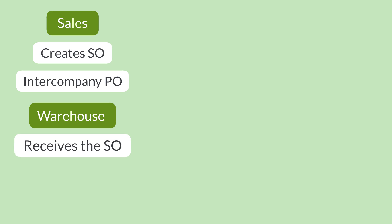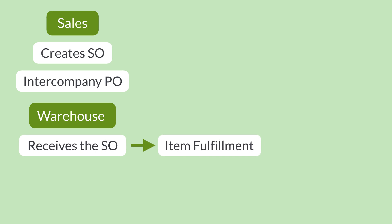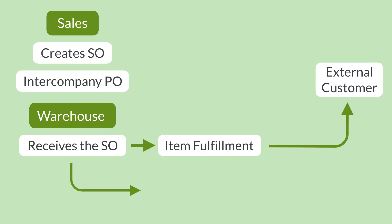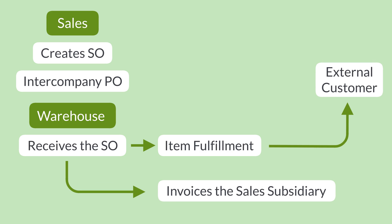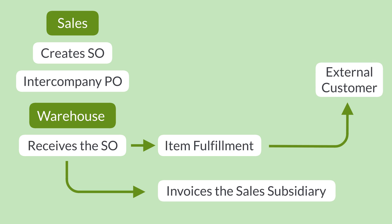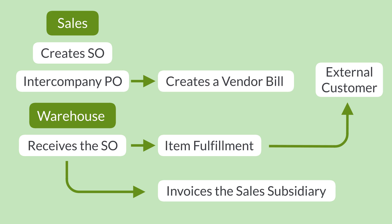The warehouse subsidiary receives the sales order from the external customer and fulfills the item. Then the warehouse subsidiary invoices the sales subsidiary for the item, and the sales subsidiary creates a corresponding vendor bill to pay the warehouse subsidiary. Finally, the sales subsidiary invoices the external customer.